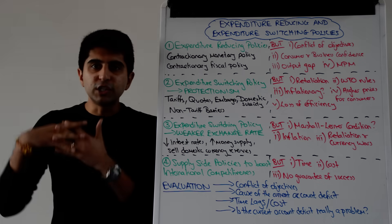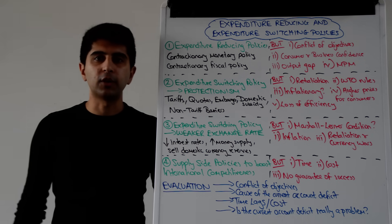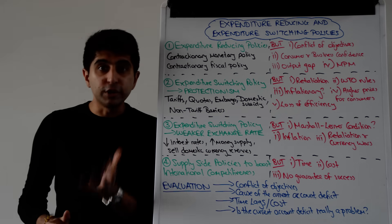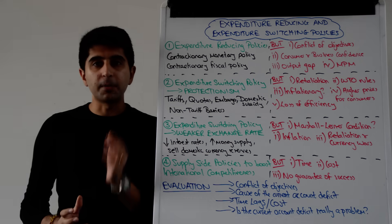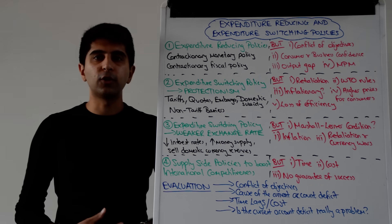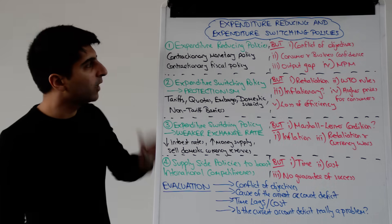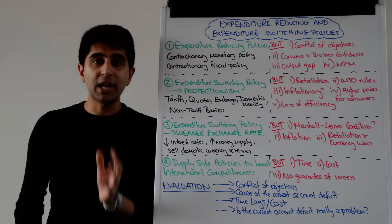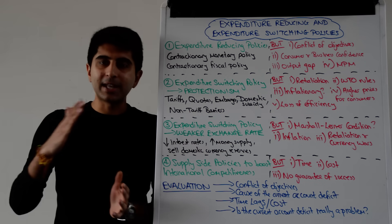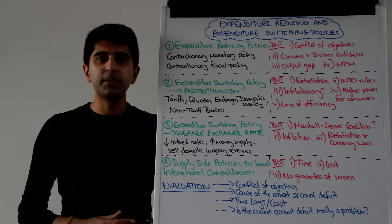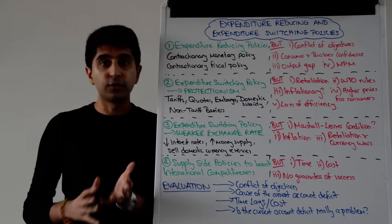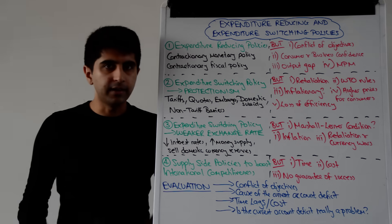Expenditure reducing policies are policies to reduce the amount of spending on imports in the economy. The way in which these policies work is to reduce aggregate demand, reduce incomes in the economy and therefore reduce the marginal propensity to import, remembering that when consumers are richer in an economy they tend to spend a lot of money on imports.